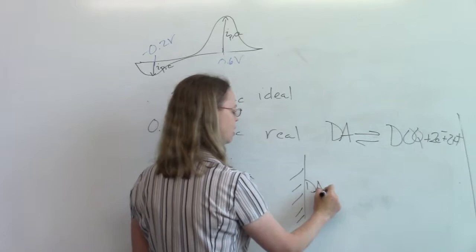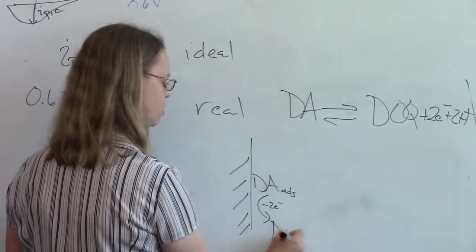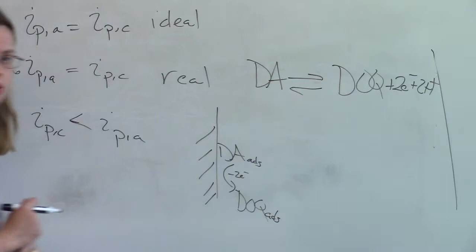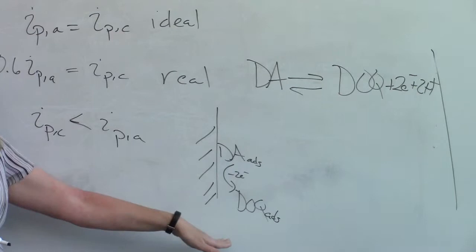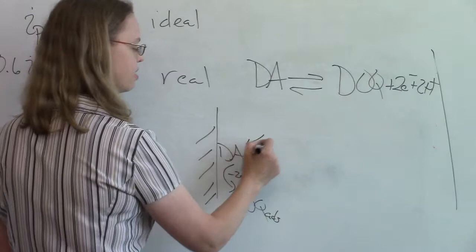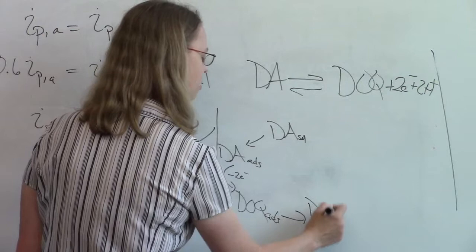And if I went back to my little electrode drawing where I have dopamine adsorbed to the electrode, it's undergoing electron transfer to dopamine orthoquinone, it would also be adsorbed to the electrode. So this is stuck to the electrode surface. It leaches its electrons. It's still stuck to the electrode surface.